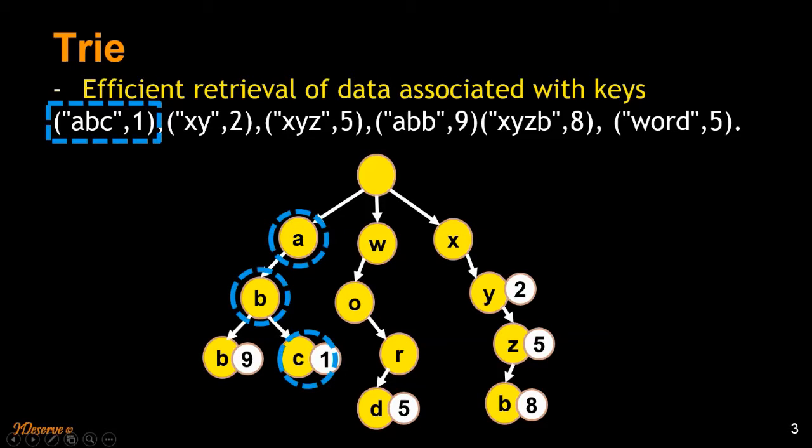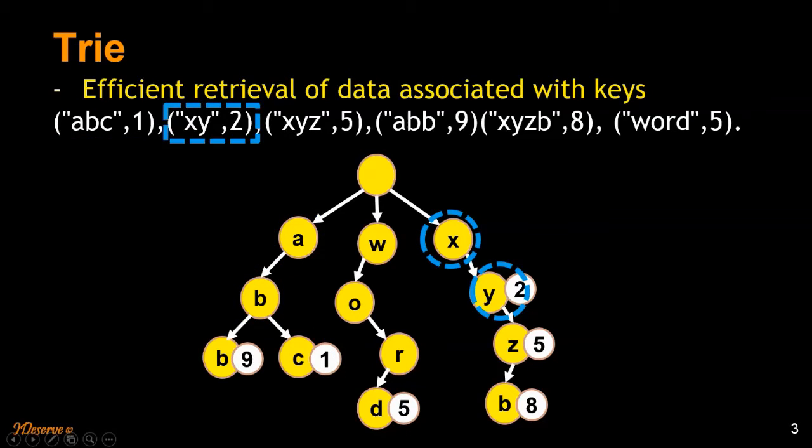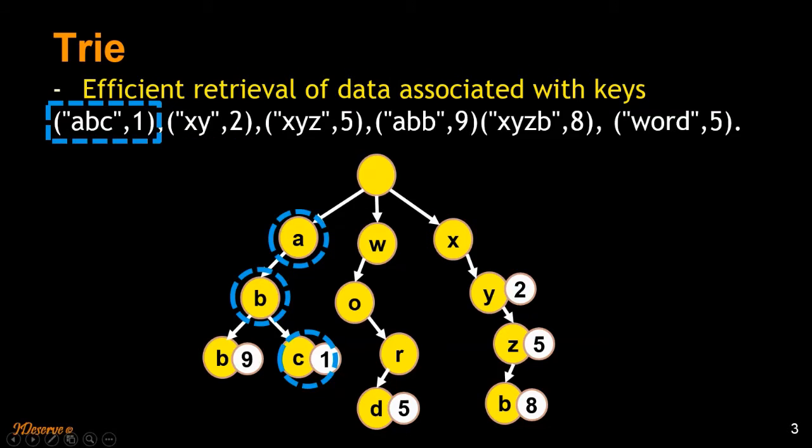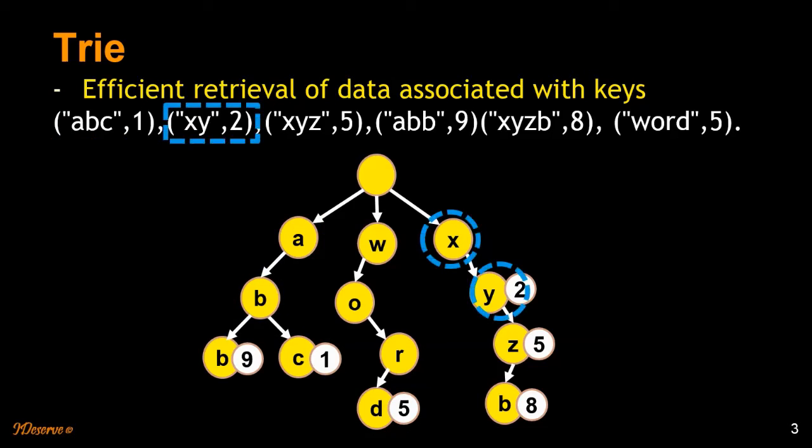So ABC is inserted here. XY is inserted here. And the corresponding values are put at the end of that particular key. So for ABC, the key ends at C and we have the value for that at this point. Every node here will have a variable initialized for that particular value. If the key would have ended at AB, we would have had the value assigned here. So I'll try to explain how the insertion happens in this particular data structure. Just stay with me for a couple of minutes.